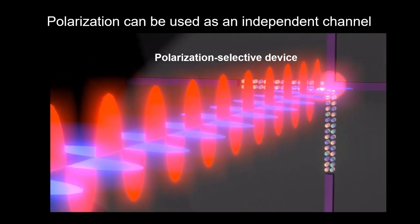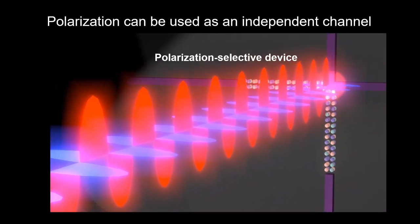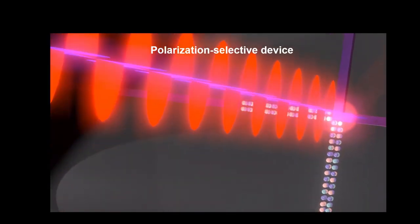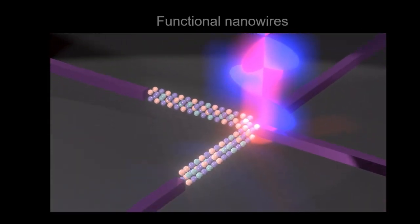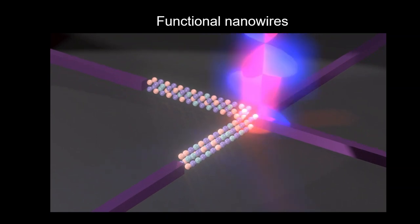If this multipolarized light can go into a polarization selective device, the information density can be hugely enhanced by the number of polarizations. In our case, we used functional nanowires.